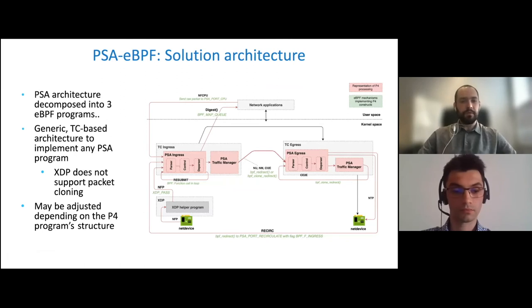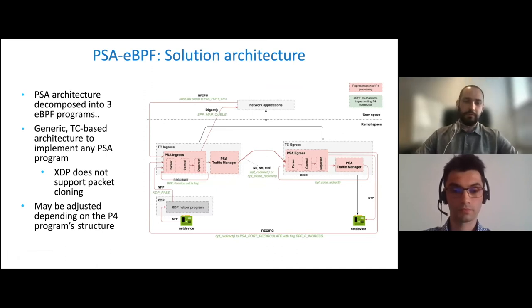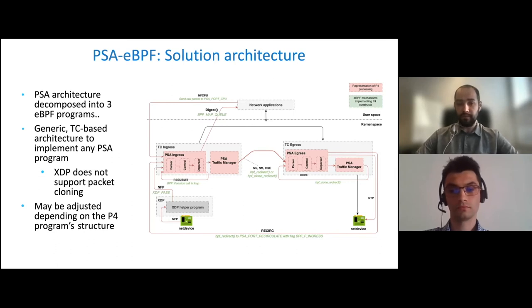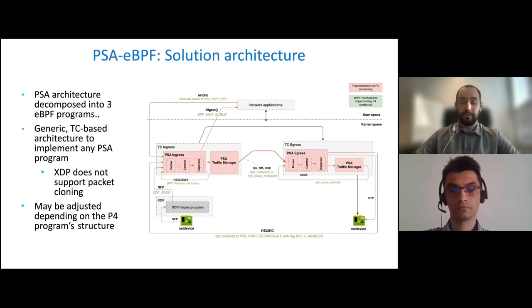The main challenge was how to map the PSA architecture into the eBPF subsystem. We decompose the PSA architecture into three eBPF programs, using three different hooks: XDP, TC-ingress, and TC-egress. Due to some limitations of the XDP hook — specifically that it does not support packet cloning — we came up with a generic TC-based architecture that allows us to implement any PSA program. However, we may adjust the architecture depending on the P4 program structure. The diagram presents the overall architecture. The red blocks represent the PSA architecture, while the green blocks and nodes define the BPF mechanisms used to implement the PSA specification.